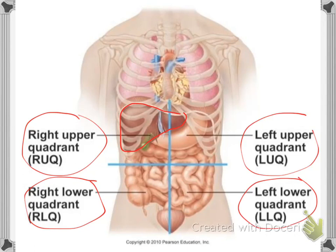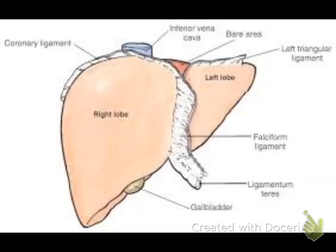These ropes or ligaments are peritoneal reflections. As mentioned in the last video, the liver is covered by a visceral peritoneum. The reflection of this peritoneum forms the ligaments which attach the liver to the diaphragm and to the abdominal wall, obligating it to stay in place. Let's talk about these ligaments using another graph.